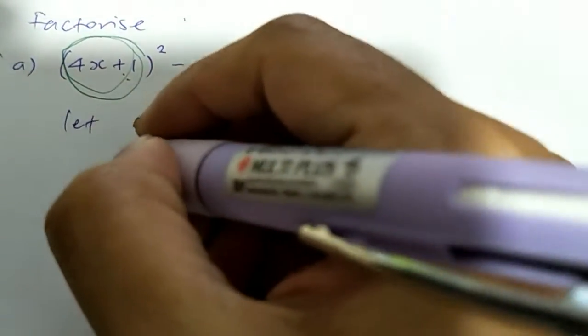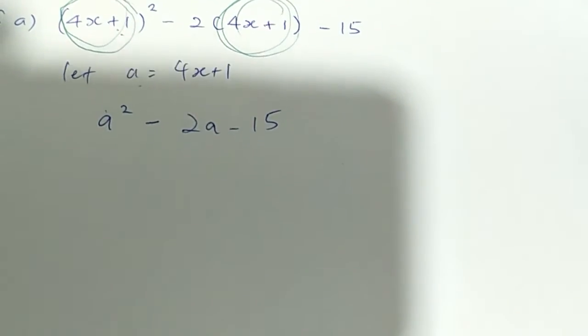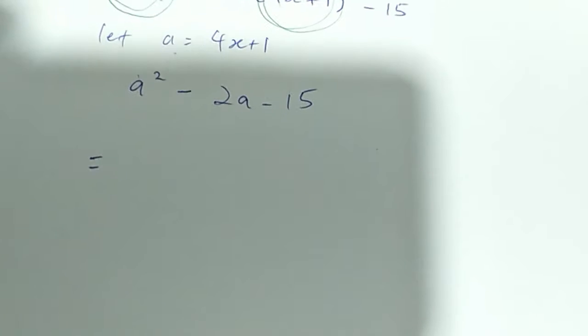So when you replace that whole thing with a, it looks something like a square minus 2a minus 15. So that looks, at least it looks doable compared to the first one. So when you have this and you need to factorize, then ask yourself,